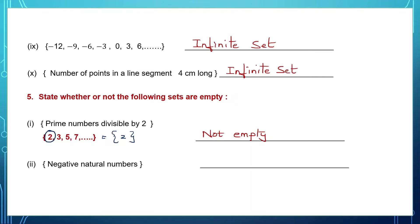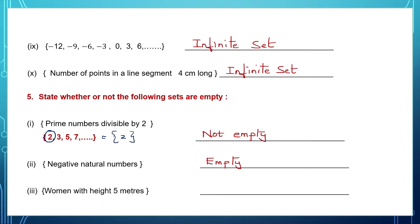Negative natural numbers. Natural numbers are all positive and start from 1 onwards. So we don't have negative natural numbers — that set is empty. Women with height 5 meters — that's very tall, around 15 feet. We don't have women with height 5 meters. So that is an empty set; there's nothing in it.